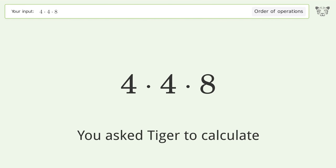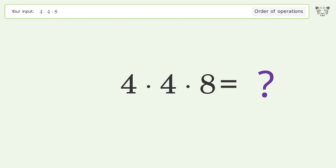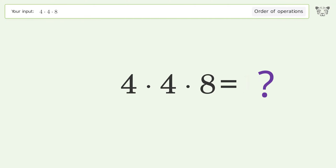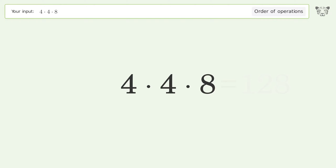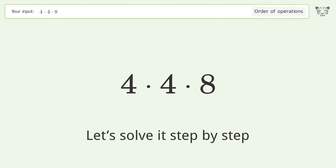You asked Tiger to calculate this. It deals with the order of operations. The final result is 128. Let's solve it step by step.